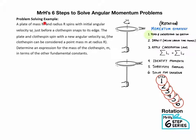A plate of mass M and radius R spins with initial angular velocity omega I, just before a clothespin snaps to the edge. The clothespin can be considered a point mass M at radius R, and together they have final velocity omega F. Determine an expression for the mass of the clothespin M in terms of the other fundamental constants. Step one is to identify the question. They asked for mass, so we write the letter M with a question mark.